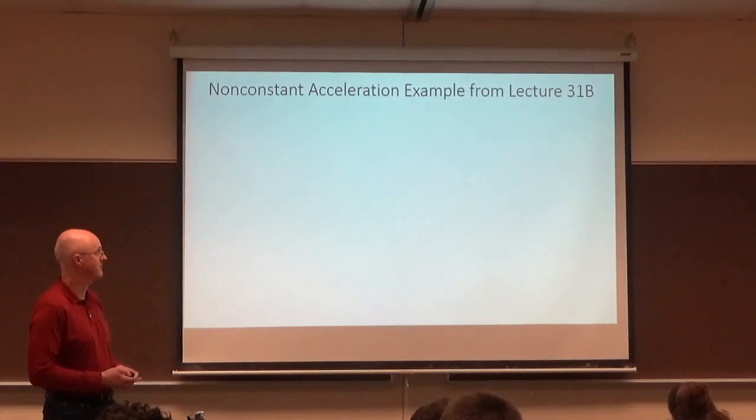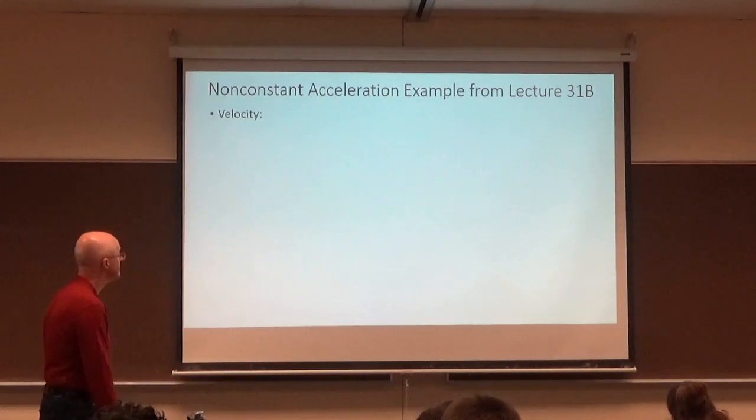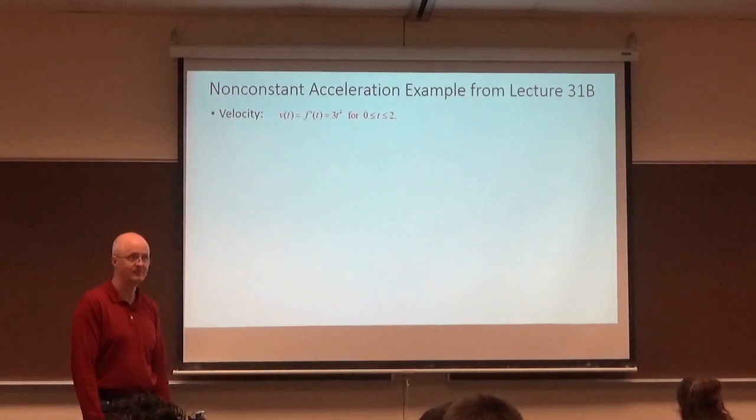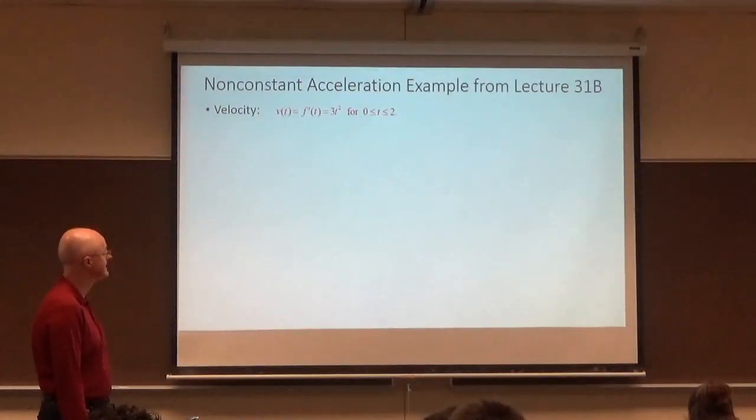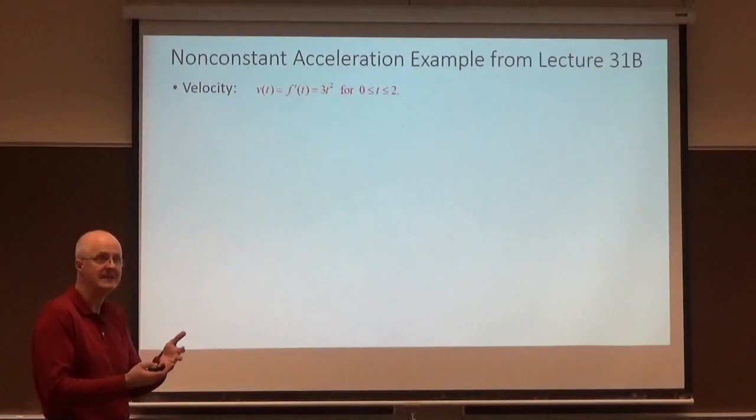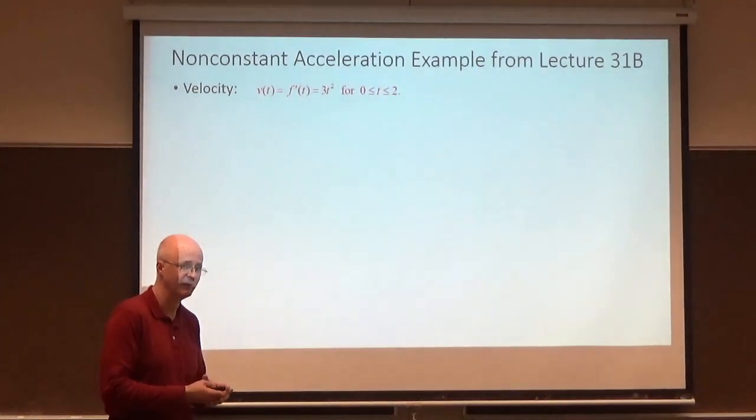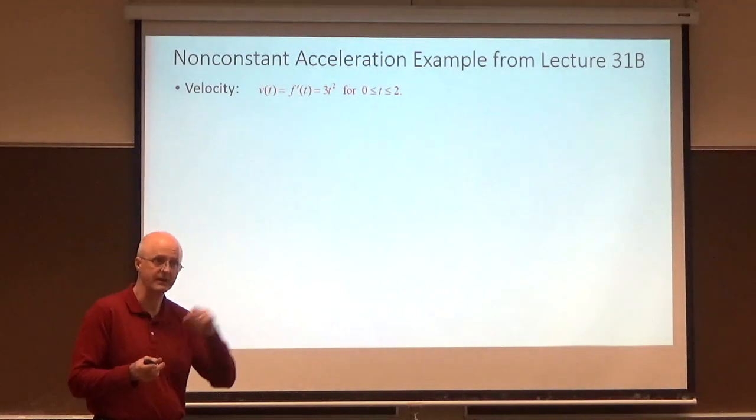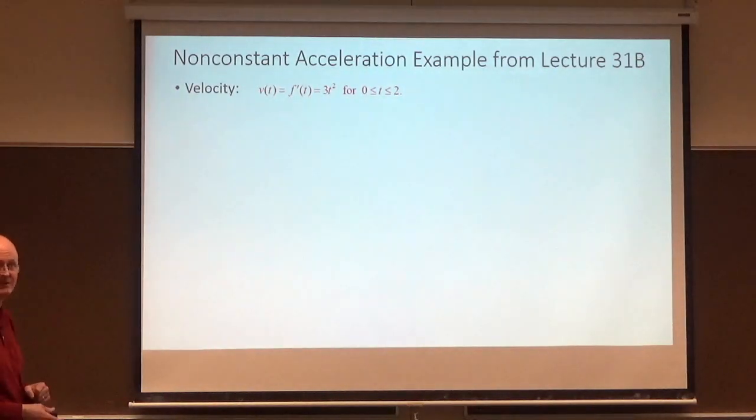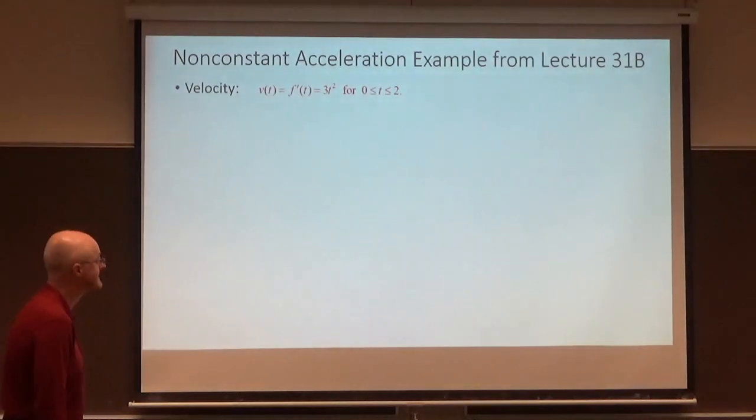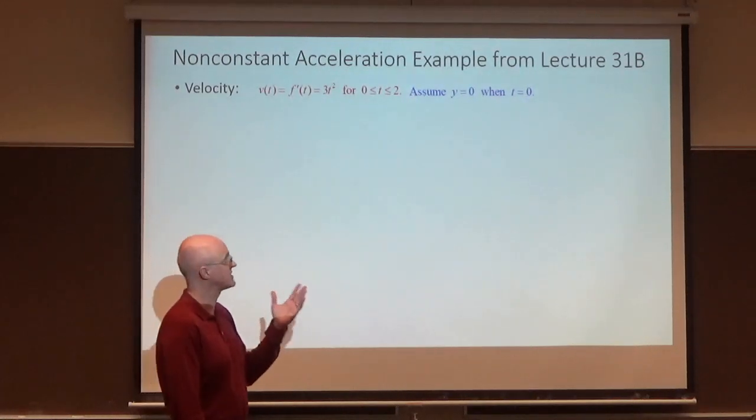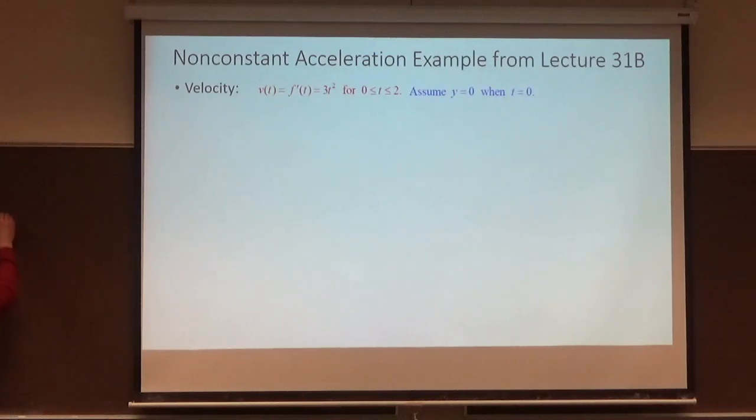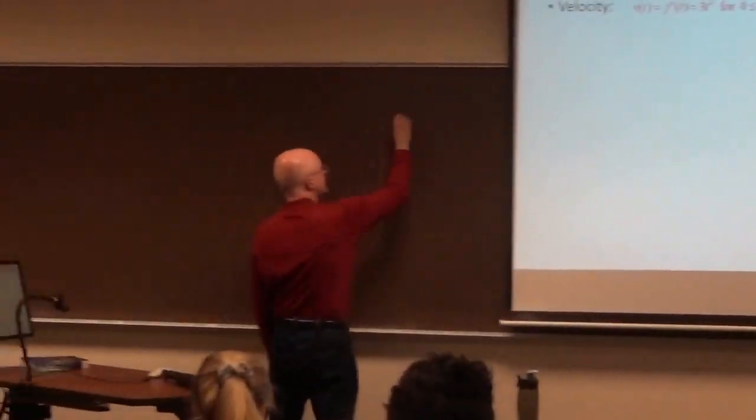Let's go back to the non-constant acceleration example from lecture 31b. That was on Monday. That was this velocity. v(t) is the velocity, it's going to be the derivative of f. f is going to be the position function. It's better to call it position instead of distance traveled, though those can be equal to each other if you're just traveling in one direction, which we actually would need here. So distance traveled and position would be the same here.